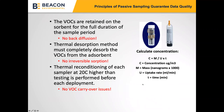For passive samplers to work, VOCs must be retained on the sorbent for the full duration of the sampling period with zero back-diffusion. The thermal desorption method Beacon uses completely desorbs VOCs from the adsorbent with no irreversible adsorption. Each sampler is thermally reconditioned at 20 degrees Celsius higher than the desorption temperature before each deployment, ensuring no VOC carryover issues — which is a common concern with canisters. Concentration is calculated as the mass collected on the adsorbent divided by the uptake rate and sampling time period.